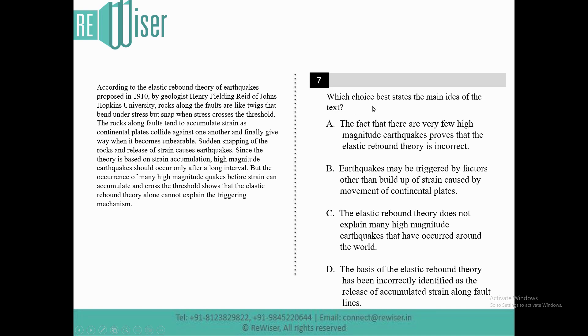Let's look at the question: Which choice states the main idea of the text? Option A: The fact that there are very few high magnitude earthquakes proves that the Elastic Rebound Theory is incorrect.